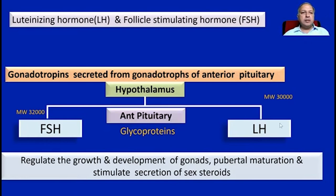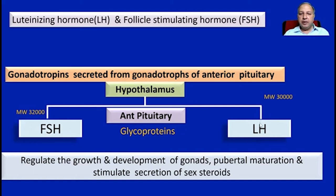Now let us discuss the gonadotropin hormones: luteinizing hormone and follicle stimulating hormone. The hypothalamus causes the release of gonadotropin releasing hormone, which acts on the anterior pituitary to cause the release of FSH — a 32,000 molecular weight glycoprotein — and luteinizing hormone, which is a 30,000 molecular weight hormone.